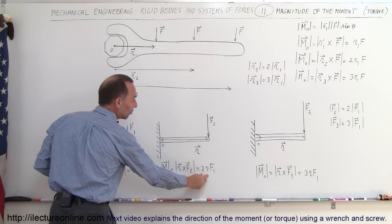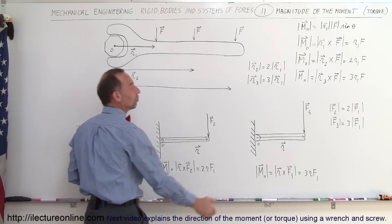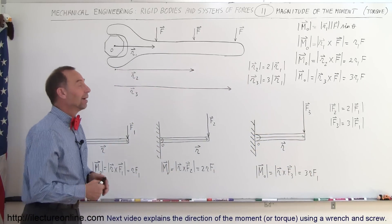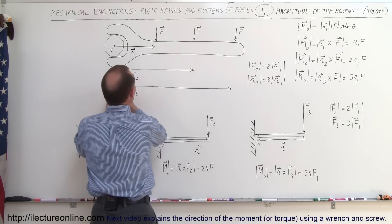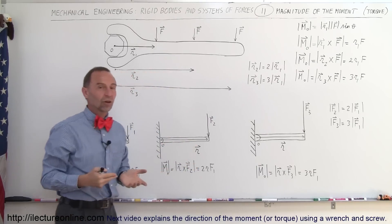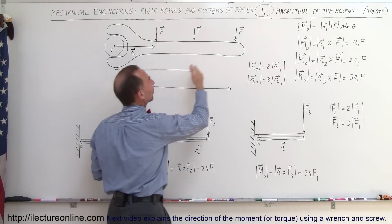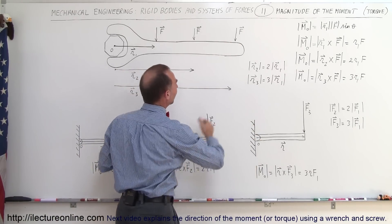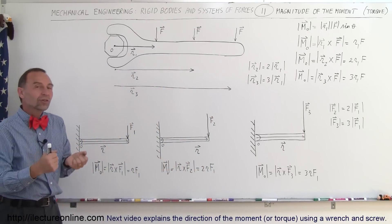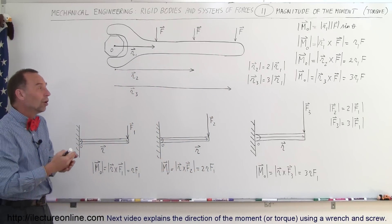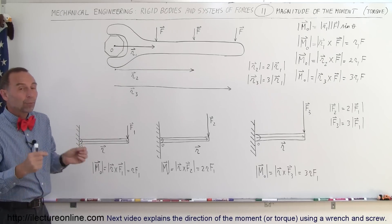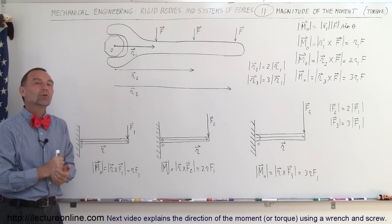If the force is doubled, we have twice the moment. If the force is tripled, we have three times the moment. So if you apply a force that's three times as large and it's three times as far away, the moment would be nine times as large — three times because the force is three times as large, and three times because the distance is three times as large. You can see that if you want to increase the moment, you simply increase the distance and/or increase the magnitude of the force, and proportionally the magnitude of the moment will change as well.